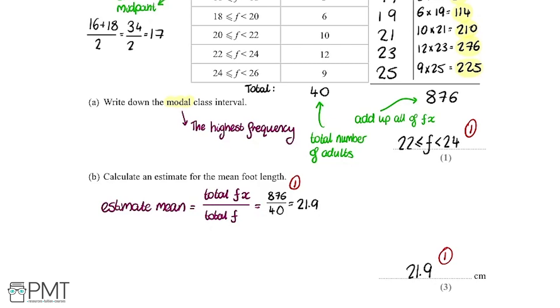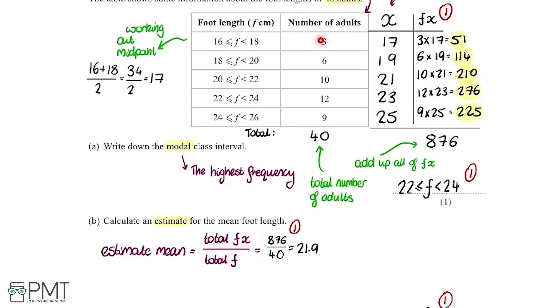One thing I want to point out is that we're working out the estimate for the mean. That's because we've got grouped data. For example, these three adults could be anywhere within this range. All three of them could have a foot length of 16, all three could have 17, or they could be a mix. But we just don't know. So we've taken the midpoint and used that to work out the mean. It's a good estimate, but we don't know the exact mean because these adults could be anywhere within these ranges. That's why what we've worked out is the estimate.